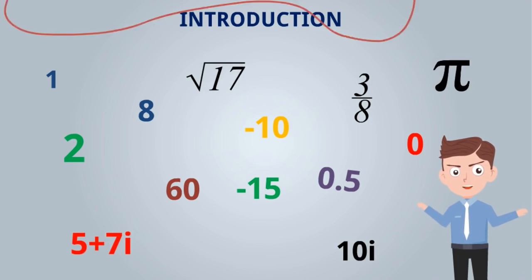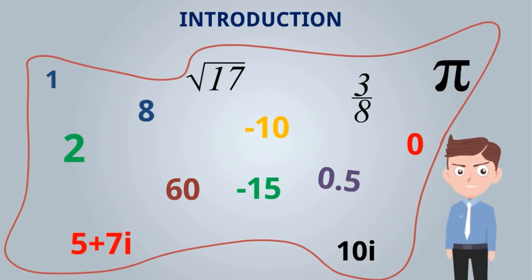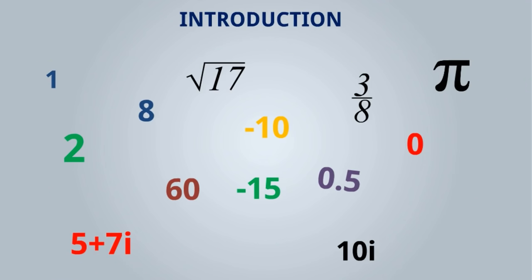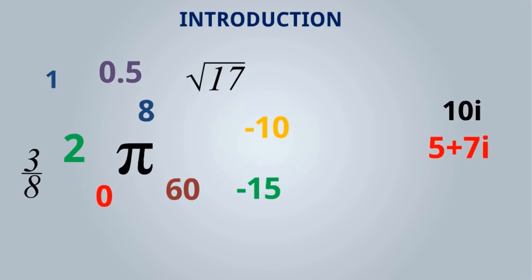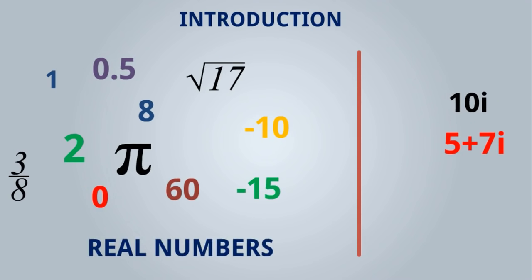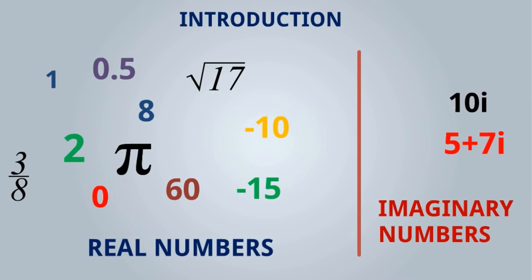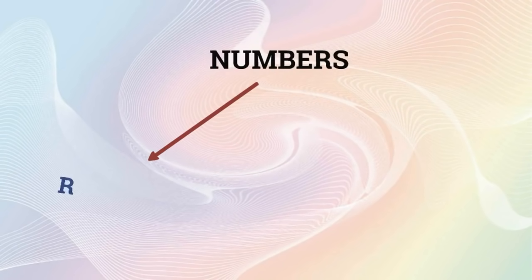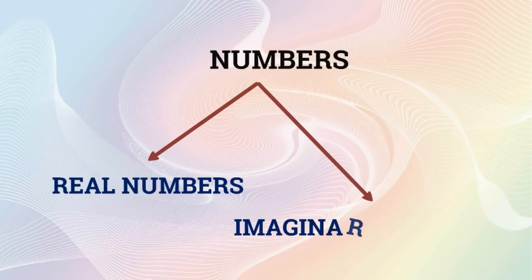These are all simply numbers. If you observe, numbers like 10i and 5 plus 7i — here i is equal to root of minus one, which is an imaginary number. But 1, 2, 3/8, 0.5, root 17, minus 10, 15, 60, 100, 105, thousand — all these numbers are real numbers. Numbers are classified into two groups: real numbers and imaginary numbers.